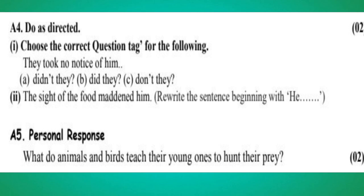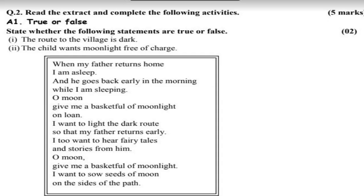Question number 2: read the extract and complete the following activities. A1: True or false — state whether the following statements are true or false. 1. The route to the village is dark. 2. The child wants moonlight free of charge. The extract is: 'My father returns home, I am asleep, and he goes back early in the morning while I am sleeping. O moon, give me a basket full of moonlight on loan. I want to light the dark route so that my father returns early. I too want to hear fairy tales and stories from him.'